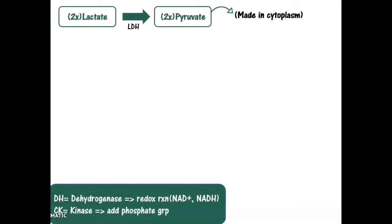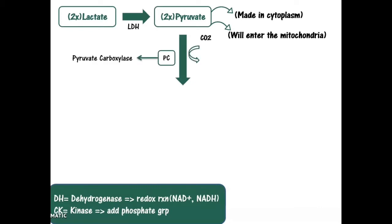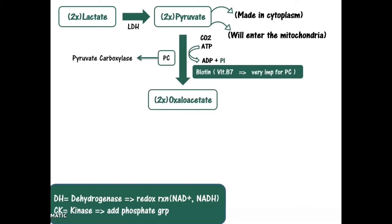These pyruvate molecules present in the cytoplasm will enter the mitochondria in order to be converted into oxaloacetate by the enzyme pyruvate carboxylase (PC), one of the most important enzymes in gluconeogenesis. This step cannot be catalyzed without the presence of carbon dioxide (CO2) and biotin, the vitamin B7, where biotin is responsible for the functioning of the PC.